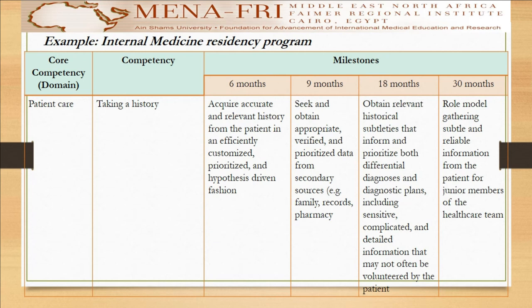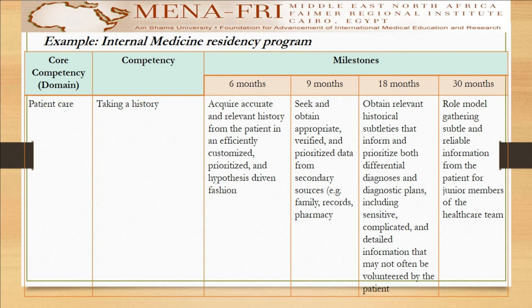After the first few months of the program, the resident will be able to acquire accurate and relevant history from the patient in an efficient, customized, prioritized, and hypothesis-driven fashion. Later on, in the third month, they will seek and obtain appropriate, verified, and prioritized data from secondary sources like family records or pharmacy. In the sixth month, they will obtain relevant historical subtleties that inform and prioritize both differential diagnosis and diagnostic plans, including sensitive, complicated, and detailed information that may not often be volunteered by the patient. At the end of the program, they will serve as a role model, gathering subtle and reliable information from the patient for junior members of the healthcare team.